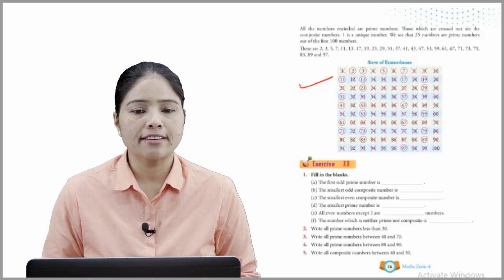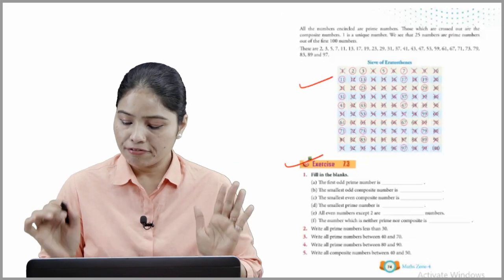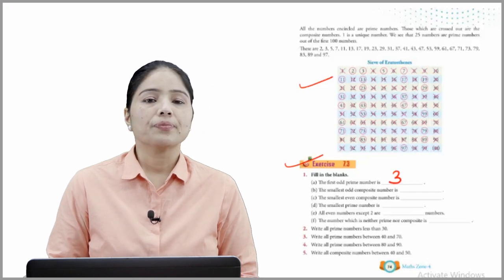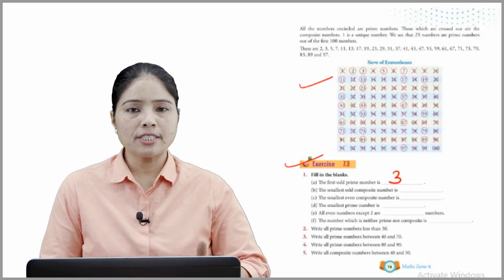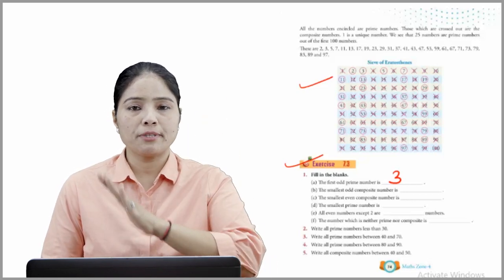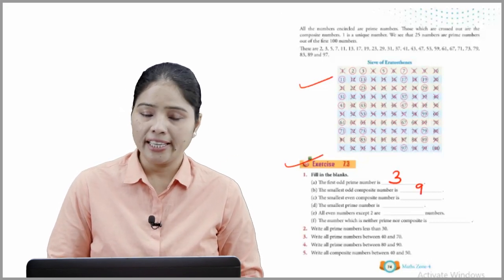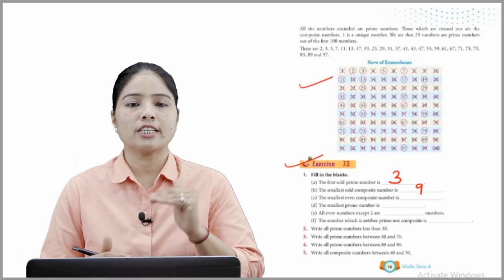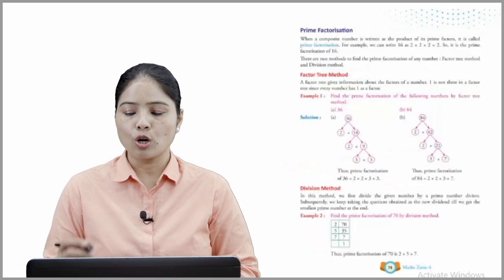Now move on to Exercise 7.3. Fill in the blanks. The first odd prime number is 3. The smallest odd composite number — we need something that is smallest, odd, and composite — that number is 9. This is how you find out which number is composite, odd, prime, and so on.